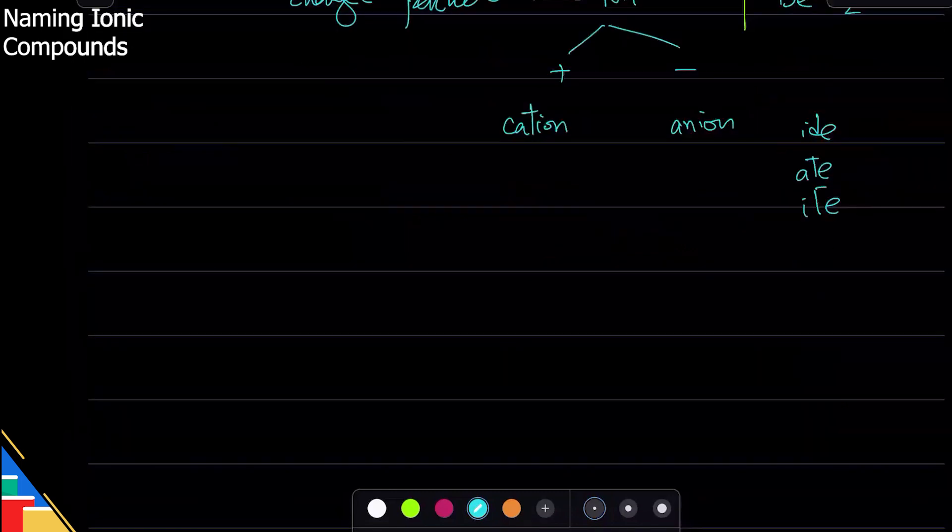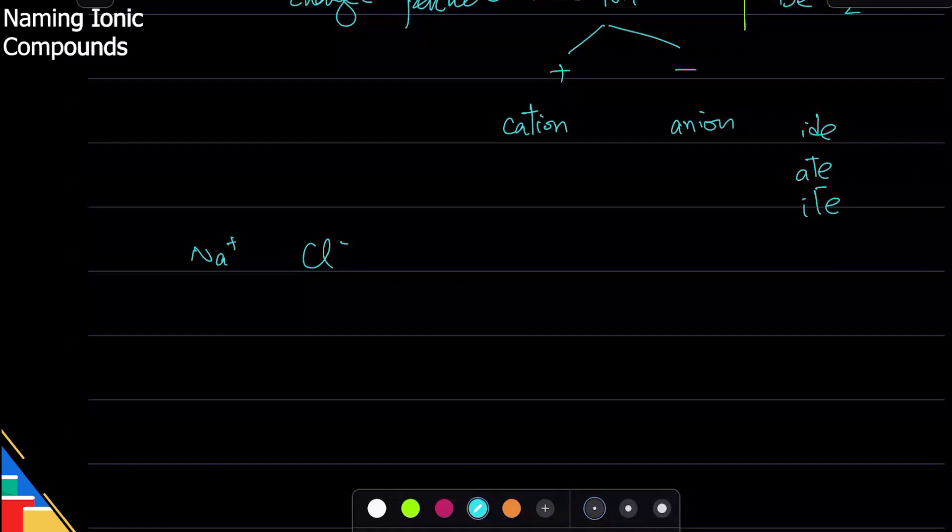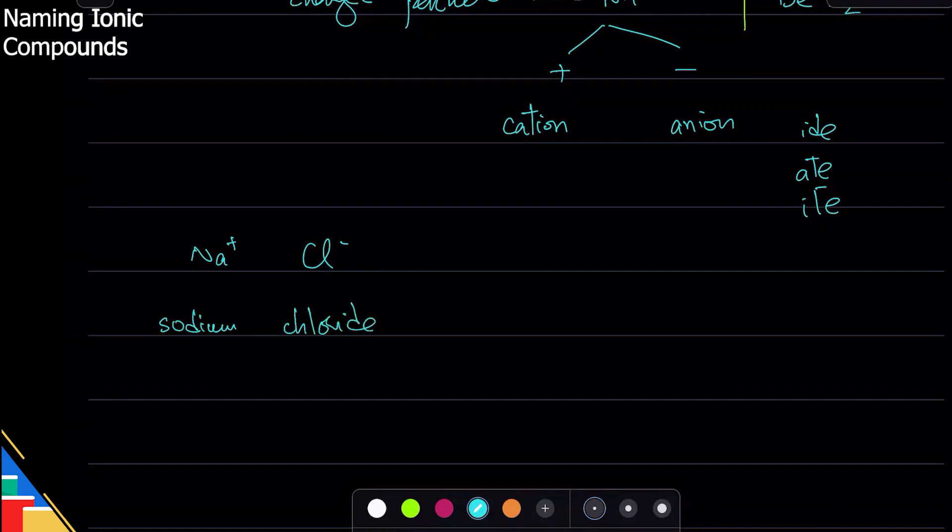Let's take an example. I have this ion and this ion, right? Now I'm not caring about the formula, I just have these two ions coming together. So let's name - the positive ion is sodium, the negative ion is chloride, right, and that's the name.